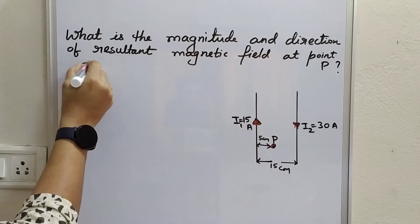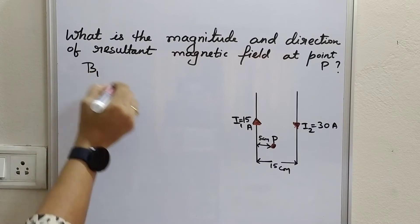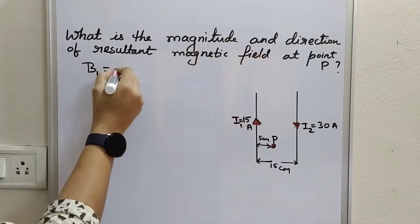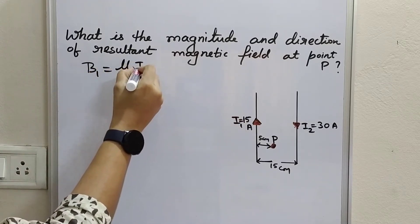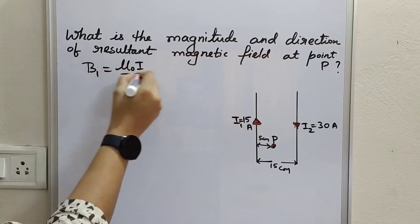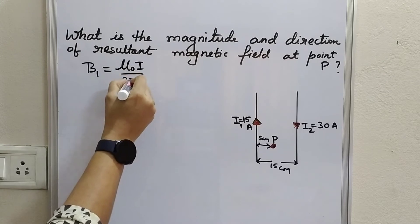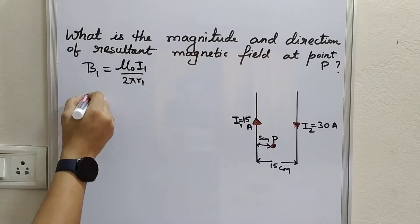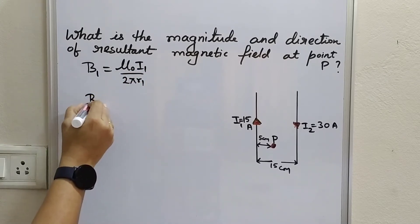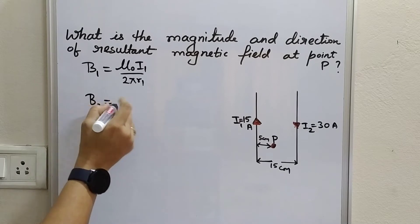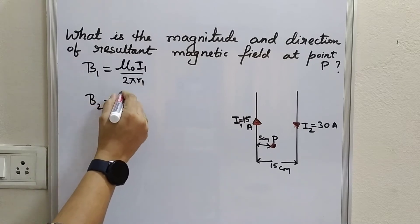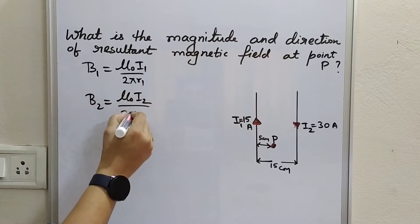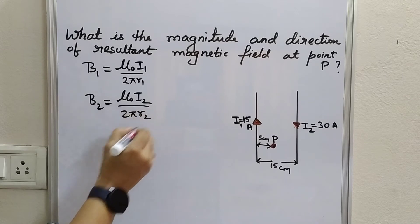The magnetic field due to the first conductor is given as B1 = μ₀I1 / 2πR1, and the magnetic field strength due to the second conductor is B2 = μ₀I2 / 2πR2.